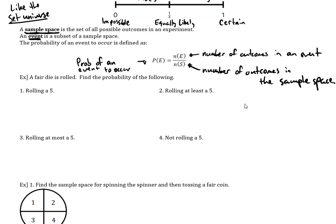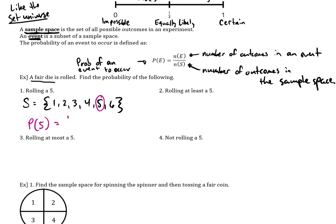Let's put it to use. A fair die is rolled. We'll use S for our sample space: {1, 2, 3, 4, 5, 6} — just like the ones you'd use in a board game. It wants us to find some probabilities. Because it's easy to write out the sample space, I'd recommend doing that every step. The probability of rolling a five: there's one five out of six different outcomes. So the probability of rolling a five is one-sixth.